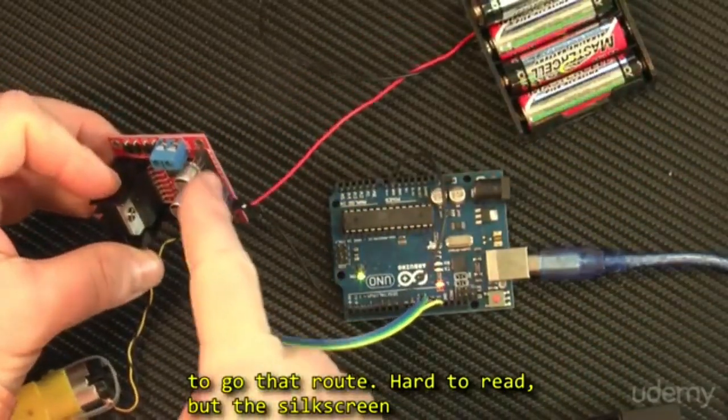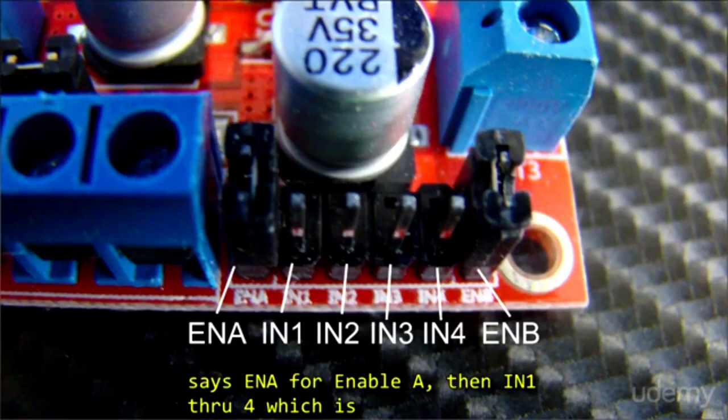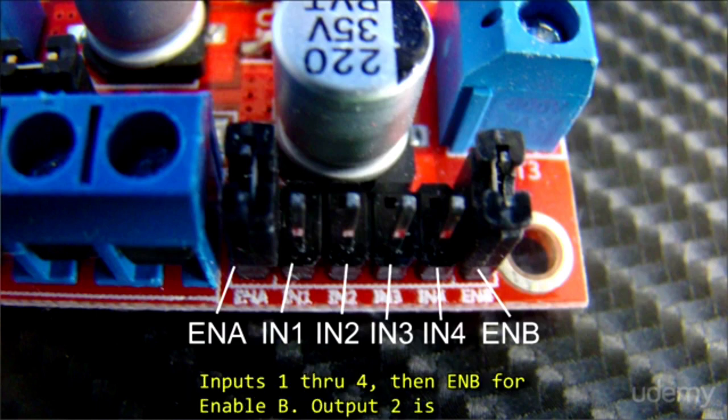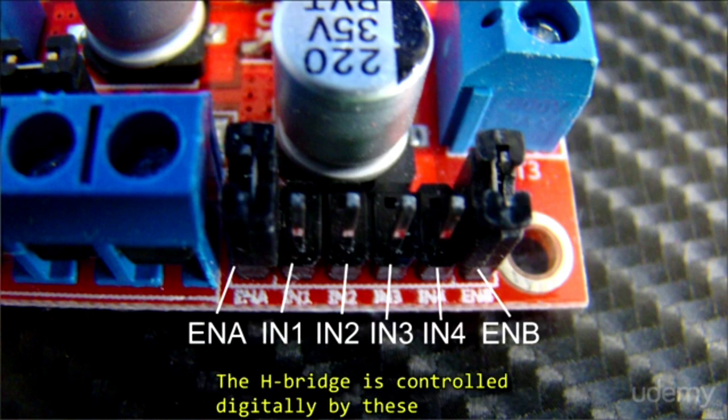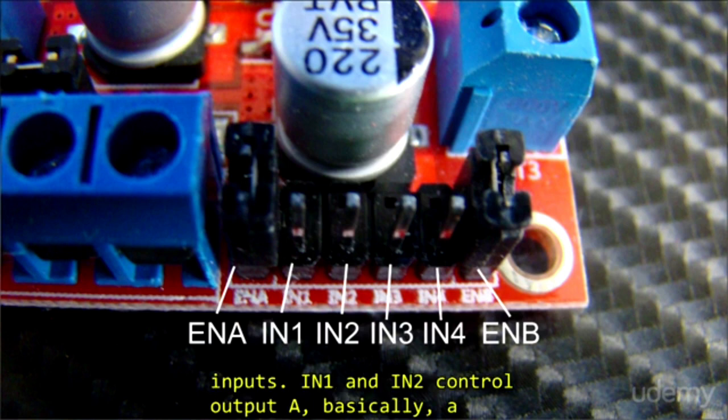It's hard to read, but the silkscreen says EN for Enable A, then IN1-4 which is Inputs 1-4, then EN for Enable B. Output 2 is Output A, Output 3 is Output B. The H-Bridge is controlled digitally by these inputs.